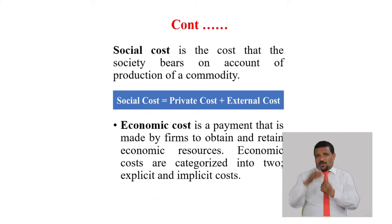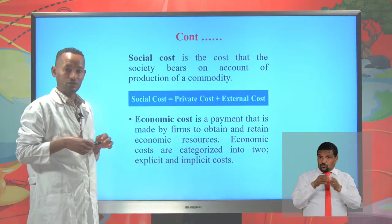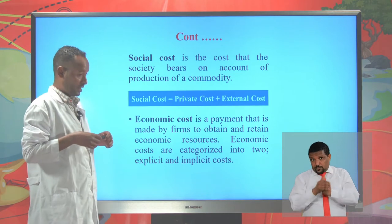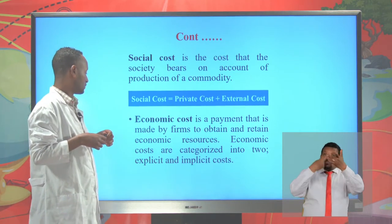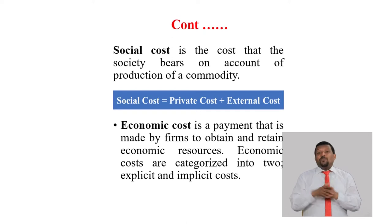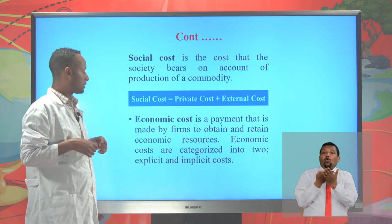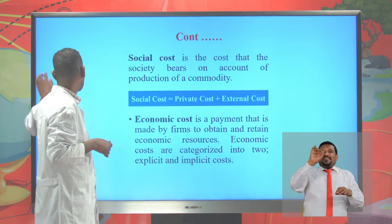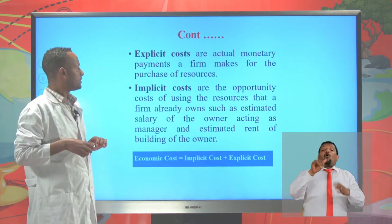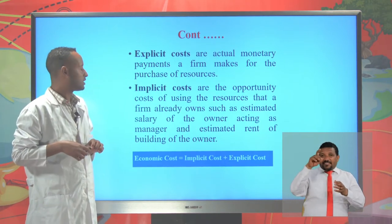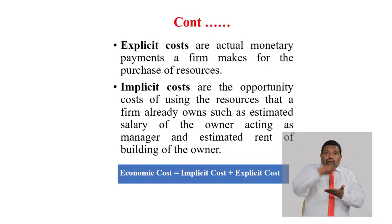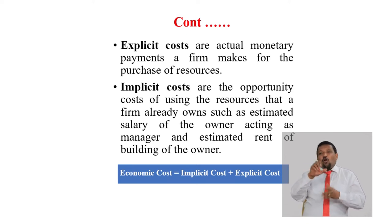The social cost is the sum of the private cost — the cost borne by the private firm — and the external cost, that is the cost borne by the society. Economic cost is the payment made by firms to obtain and retain economic resources. Economic costs are categorized into two: explicit costs and implicit costs. Explicit costs are actual monetary payments made by the firm for the purchase of resources; these are out-of-pocket expenditures.